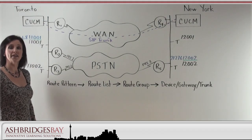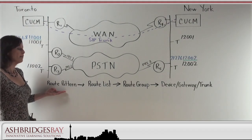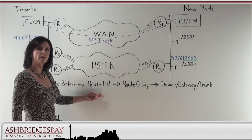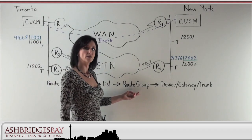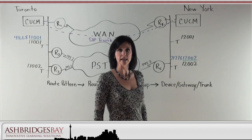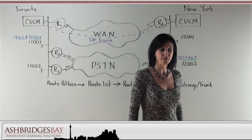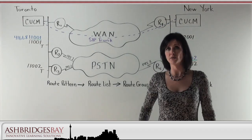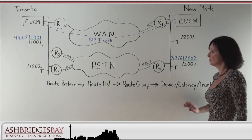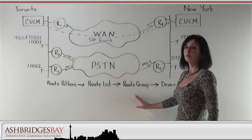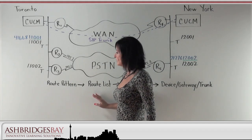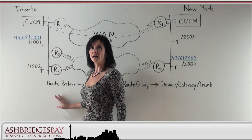So how does the dial plan hierarchy work? We have route patterns that point to a route list, that points to a route group, that points to a device which can be a gateway or a trunk. When you are configuring this, you actually do it from right to left. You put in your device, you build up your route group, you build out a route list, and then you put in your route pattern.